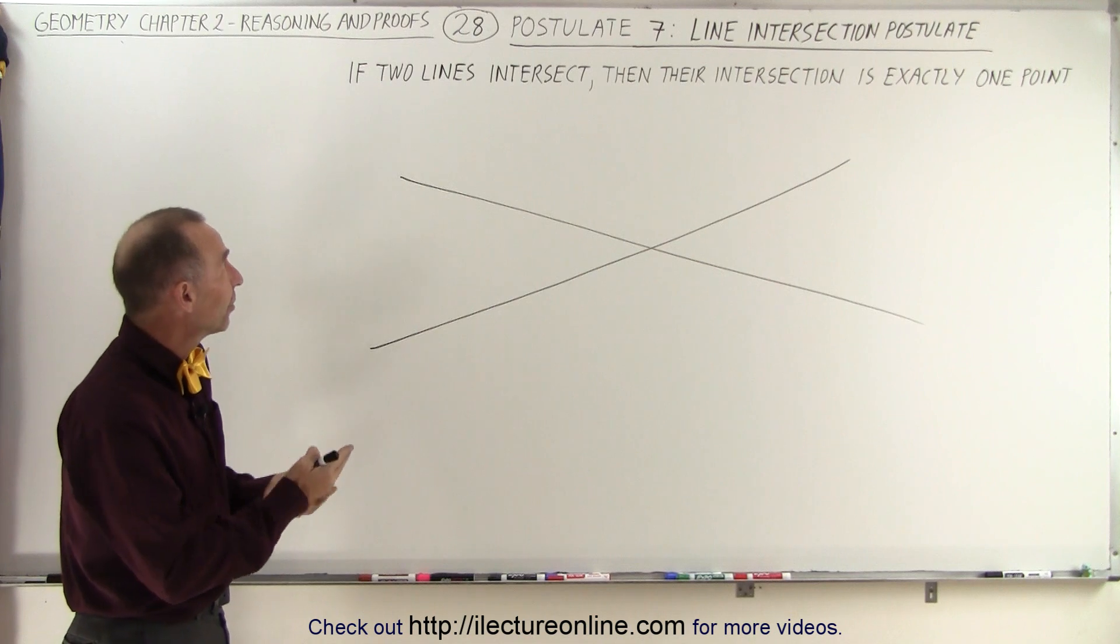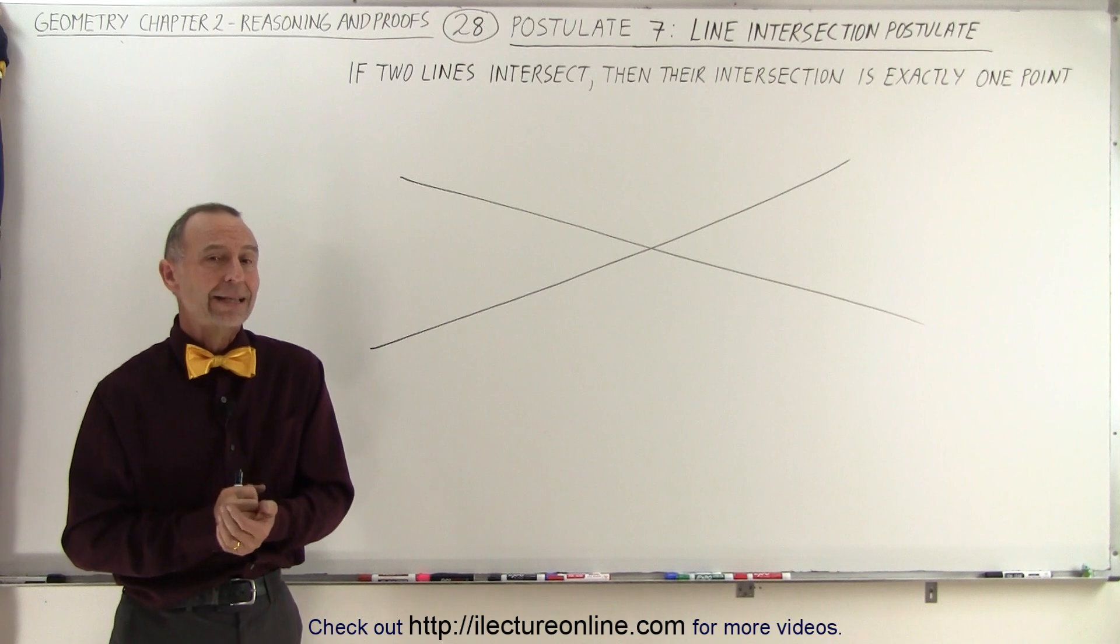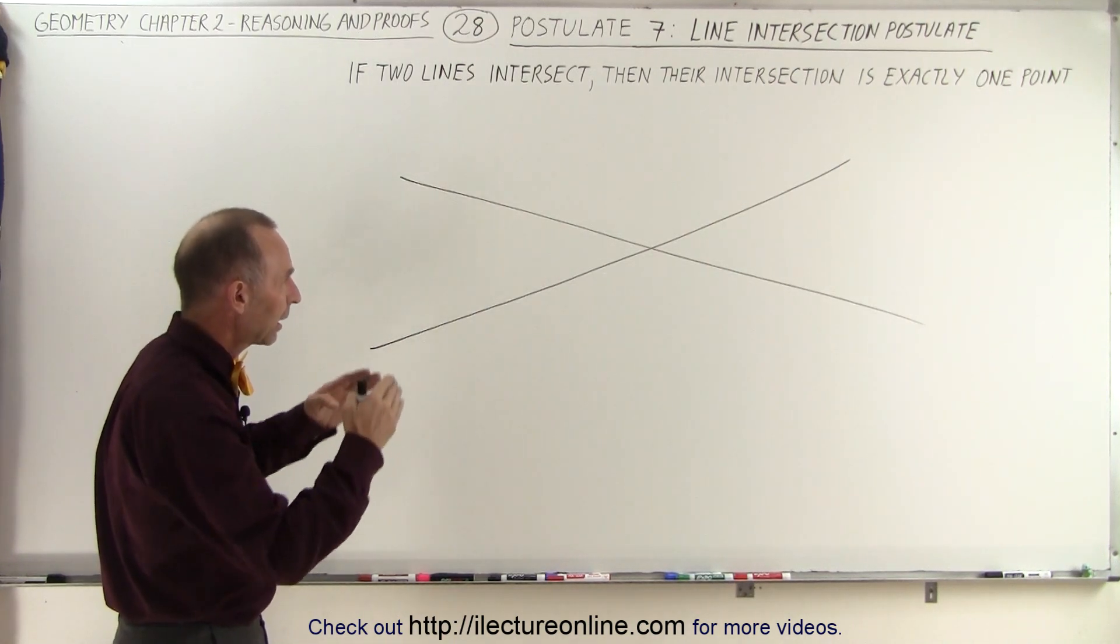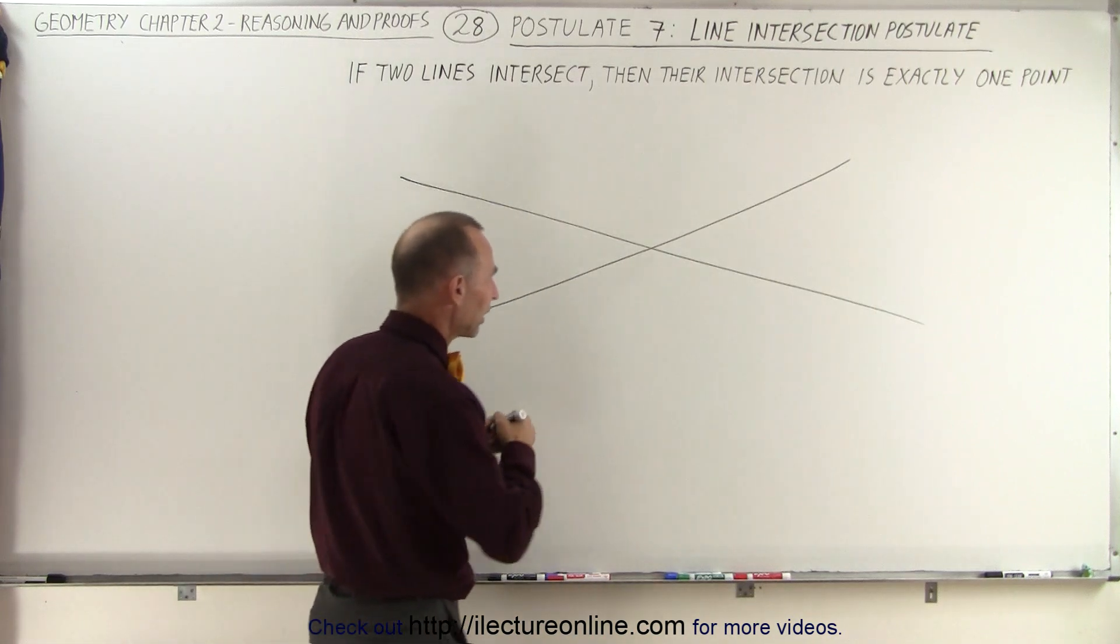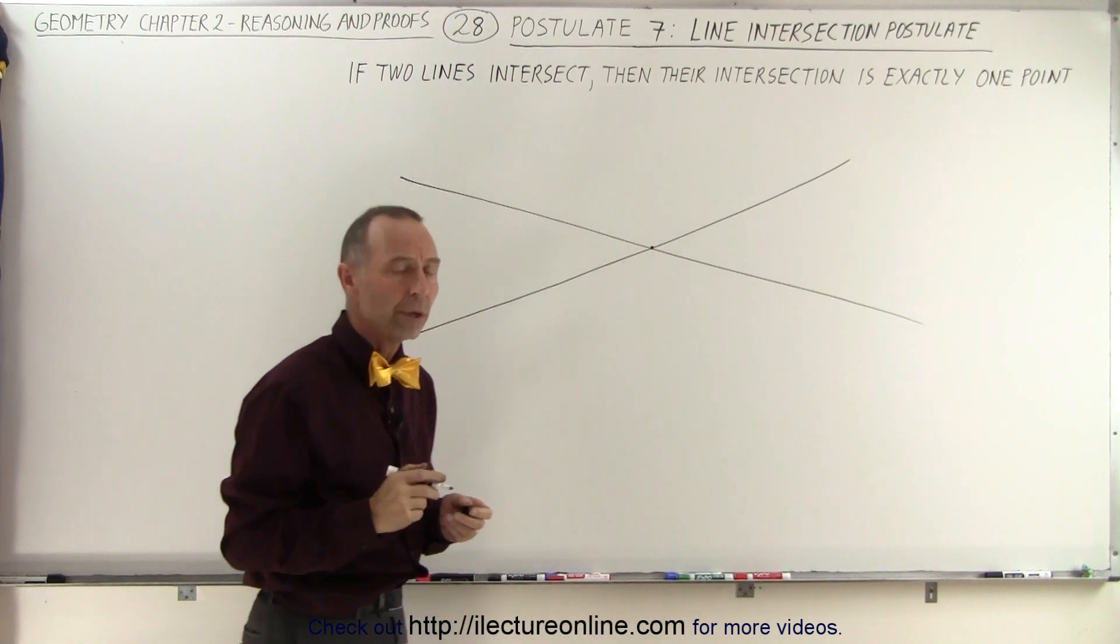It states that if two lines intersect, then their intersection is exactly one point. Here we have two lines. They clearly intersect at this location right here, and that is exactly one point.